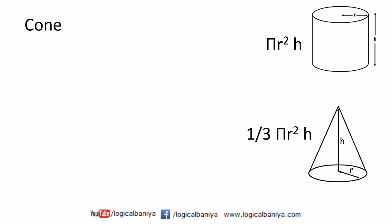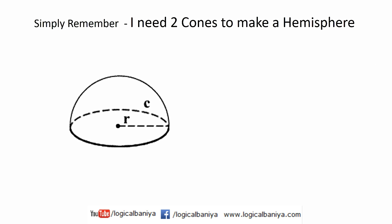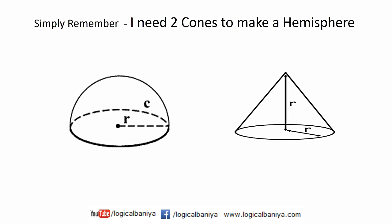Now let's find the volume of the hemisphere. Simply remember: I need two cones to make a hemisphere. Now let's visualize it so it will become very easy for you to remember. Let's take a cone with radius r and height r.